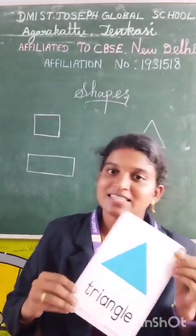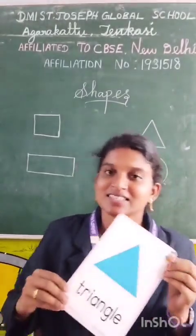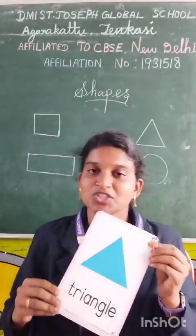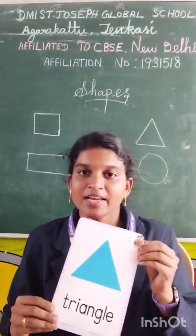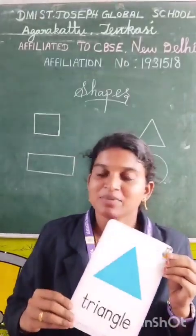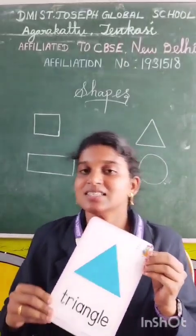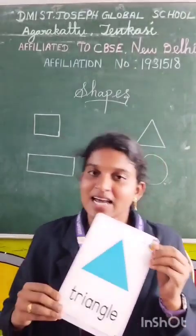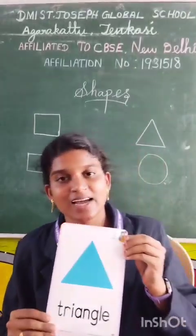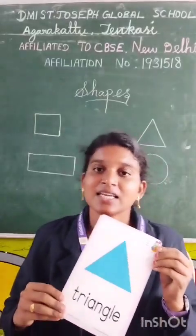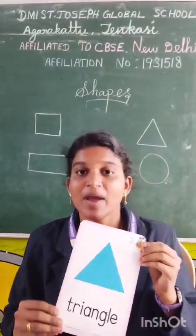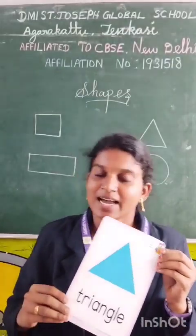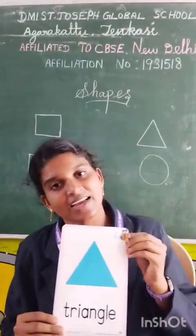I am a triangle, triangle. I have a pointy little shape. I have three sides. I am a triangle, triangle. Once again: I am a triangle, triangle. I have a pointy little shape. I have three sides. I am a triangle, triangle.